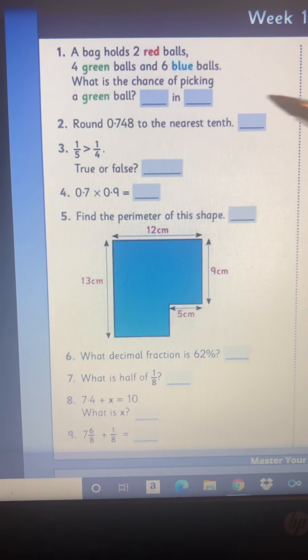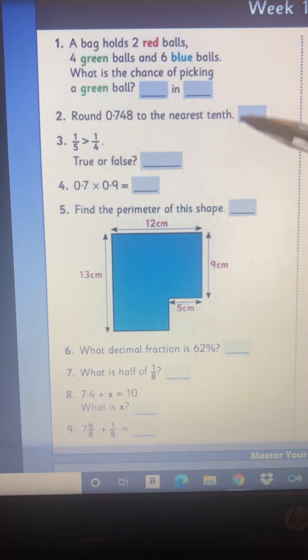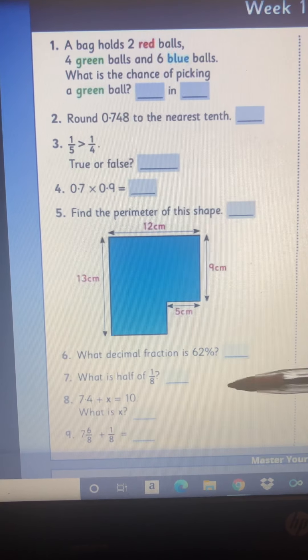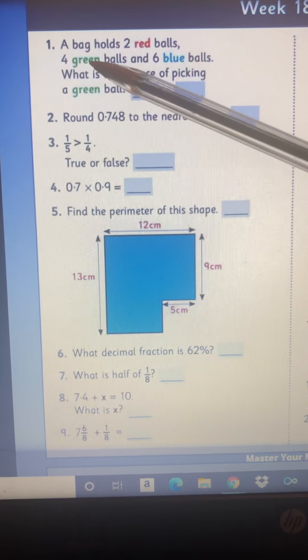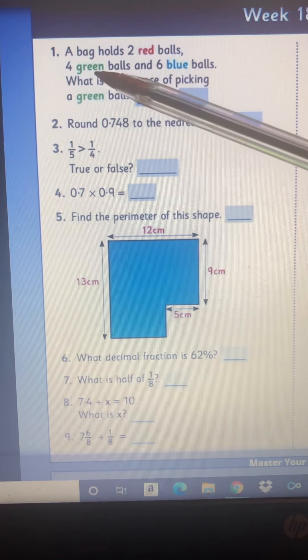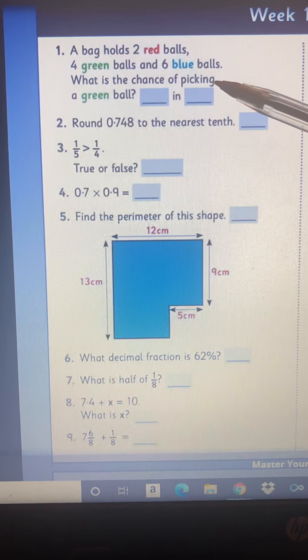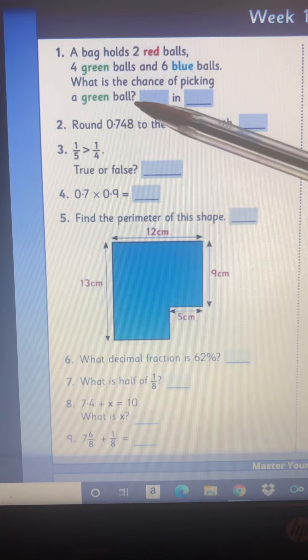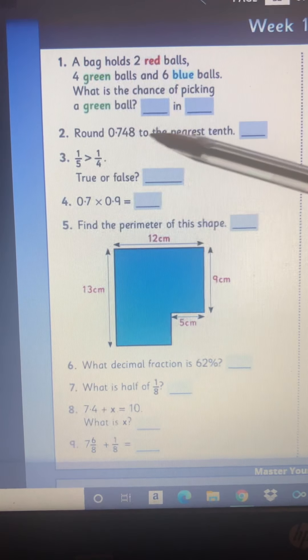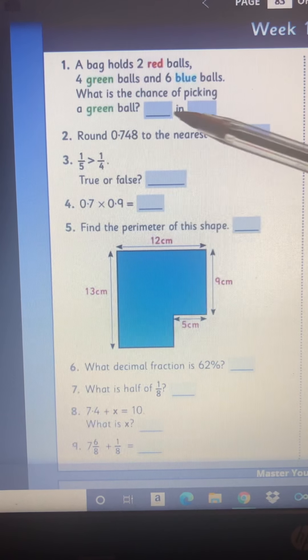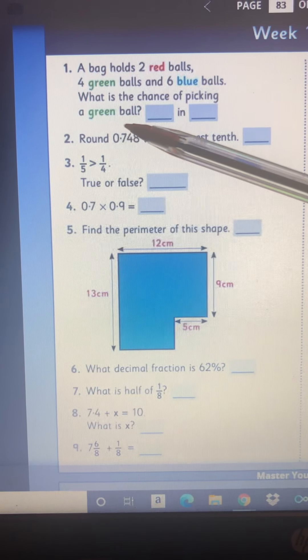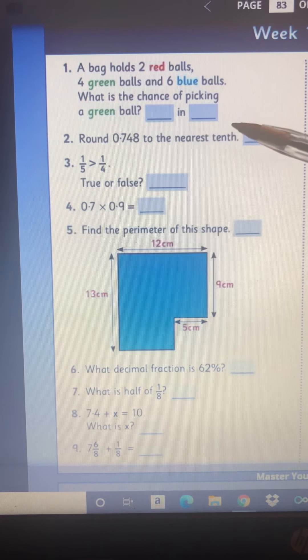Week 18 test. So it's quite easy. I'll just go through some of the ones that might be a bit more difficult. So number one, a bag holds two red balls, four green balls and six blue balls. What is the chance of picking a green ball? So you need to find out how many balls there are all together, how many green balls, and then it's a four in something chance.